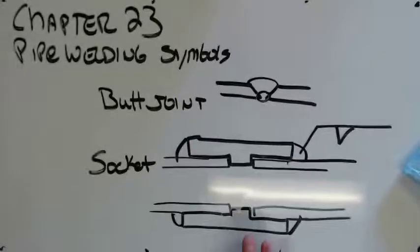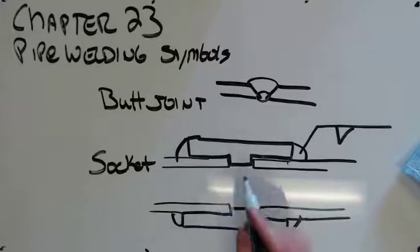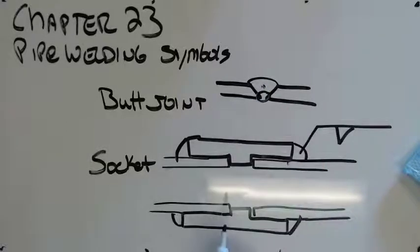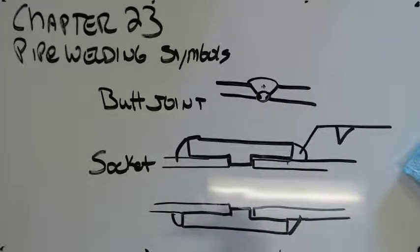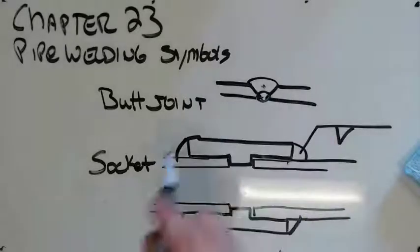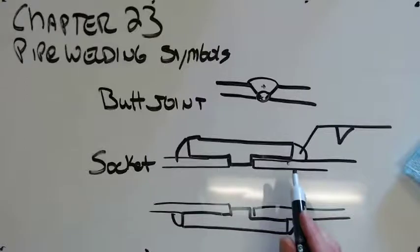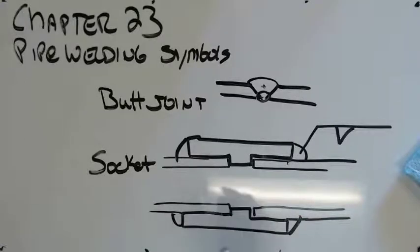Now, this is not as good a connection as that, but this is way easier to do because you see you've got all these bevels up here. We don't have to bevel these. We just throw them in the socket and weld them. The other cool thing is to do this weld, we've got to be pipe certified. To do this weld, we don't. We can be plate certified on fillets and we're certified to make these connections.